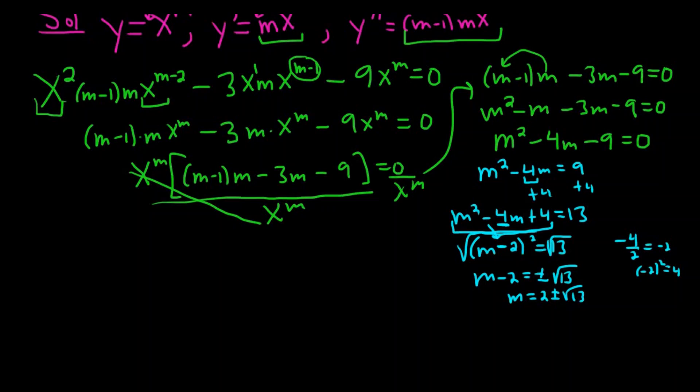So whenever we have distinct real roots and a Cauchy-Euler differential equation, the formula is c1 x to the m1, plus c2 x to the m2.